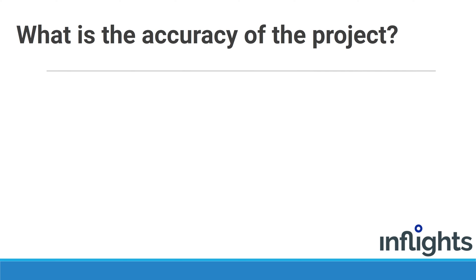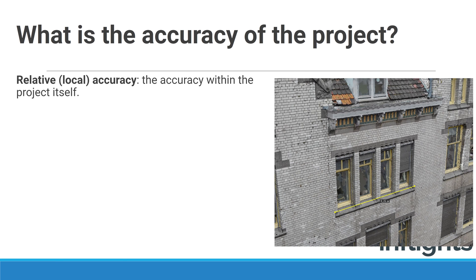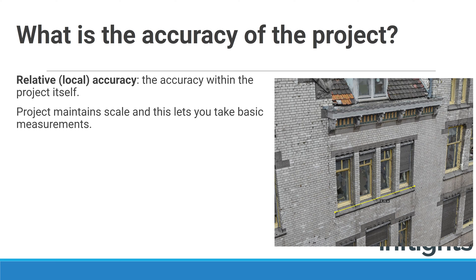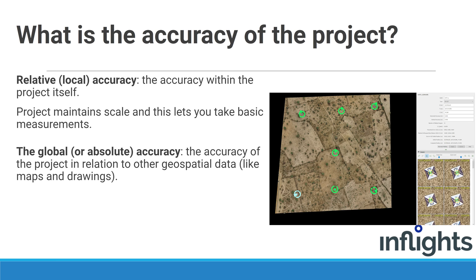What is a project's accuracy? Accuracy can be divided into relative and global accuracy. The relative or local accuracy is the accuracy within the project itself — the project maintains scale and lets you take accurate basic measurements. In other words, if a distance between two points measures 10 meters in the real world, it also measures 10 meters on the map or 3D model. The global or absolute accuracy is the accuracy of the project in relation to other geospatial data like maps and drawings.